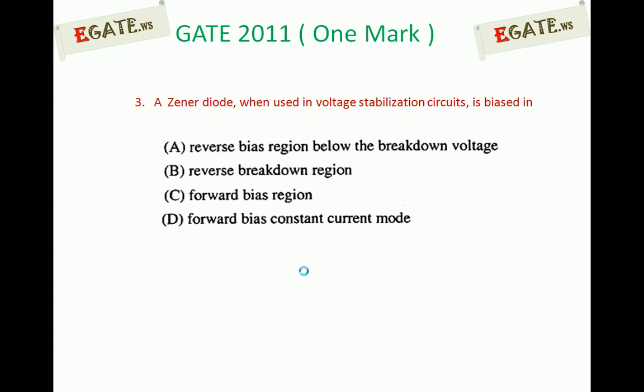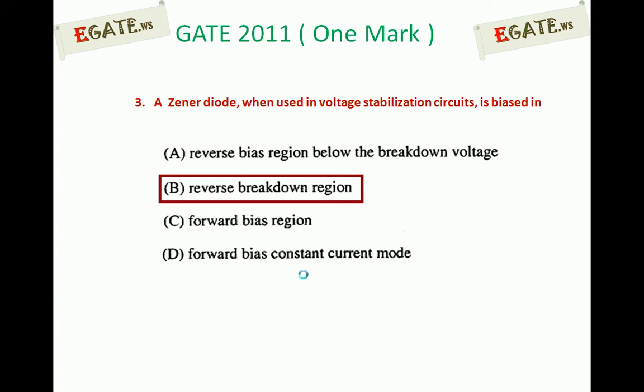A Zener diode, when used in voltage stabilization circuits, is biased in: (a) reverse bias region below the breakdown voltage, (b) reverse breakdown region, (c) forward bias region, (d) forward bias constant current mode. The correct answer is (b): reverse breakdown region.